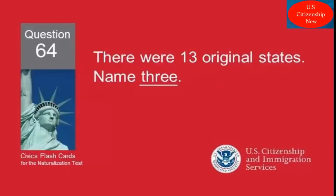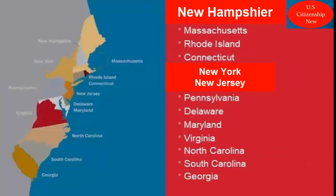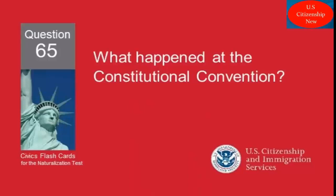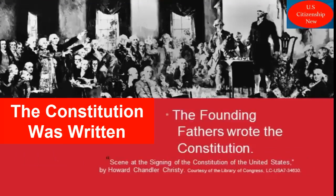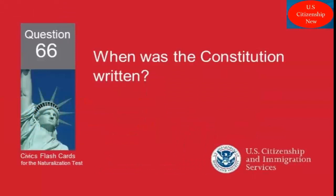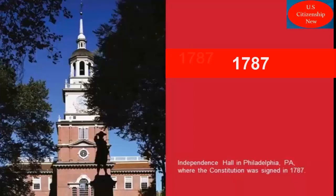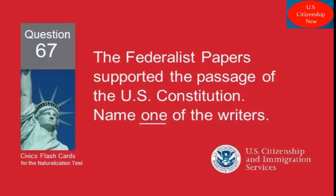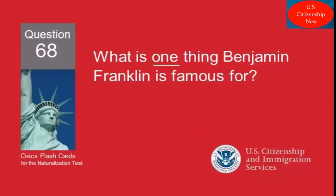There were 13 original states. Name three. New Hampshire. New York. New Jersey. What happened at the Constitutional Convention? The Constitution was written. When was the Constitution written? 1787. The Federalist Papers supported the passage of the U.S. Constitution. Name one of the writers. John Jay.